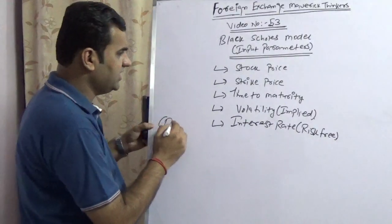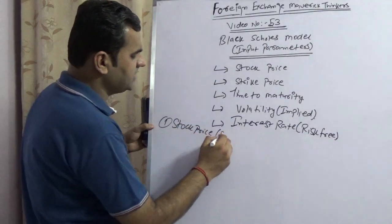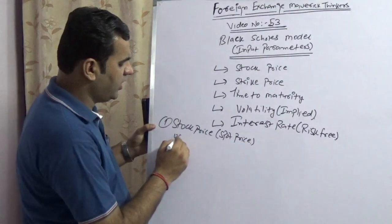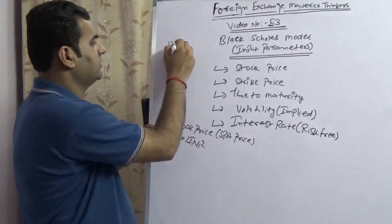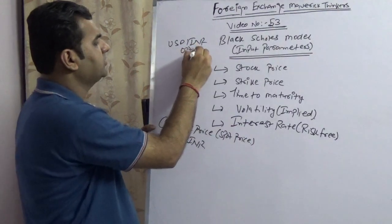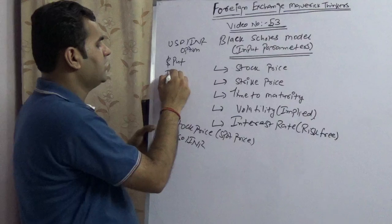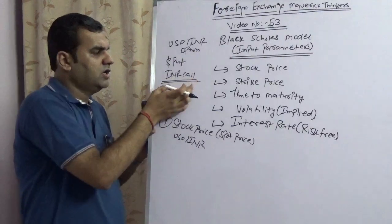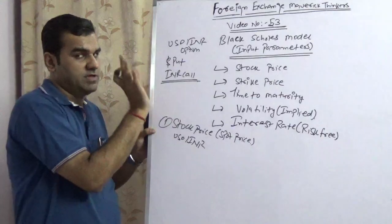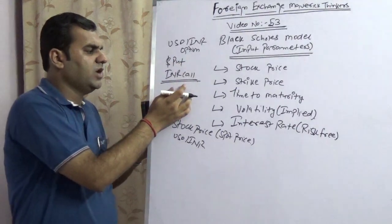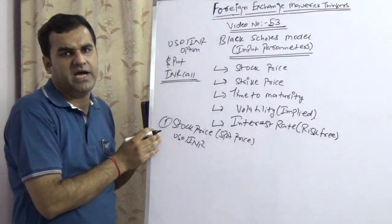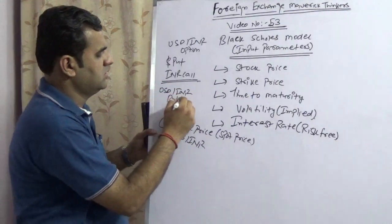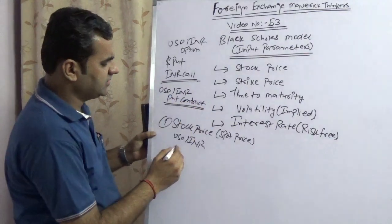The first parameter, stock price, also refers to spot price, the current price in the market. If you are an exporter doing USD-INR options, this is a dollar put INR call. In this, you have the right to sell dollars and the right to buy INR. This is a USD-INR put contract. The current spot rate, assuming, is going at 64.